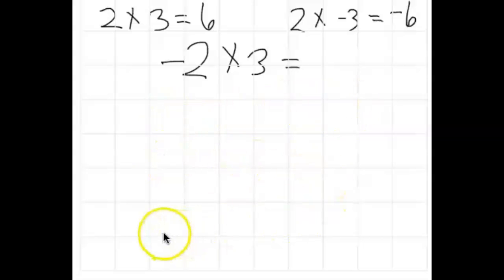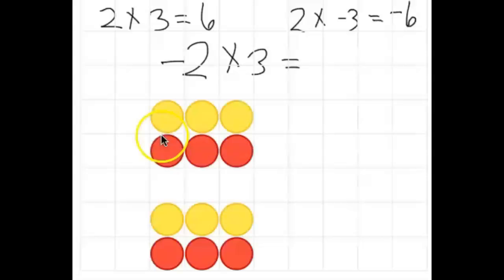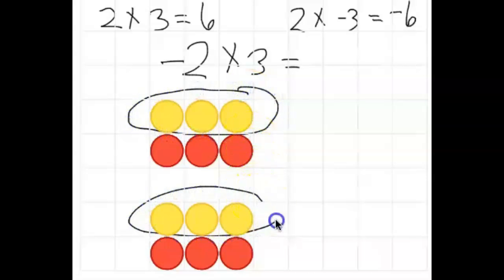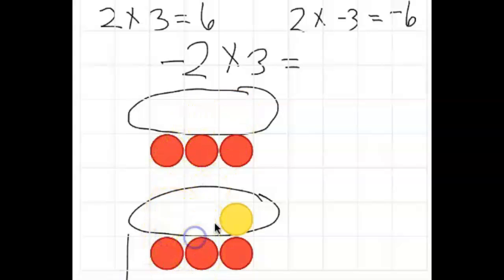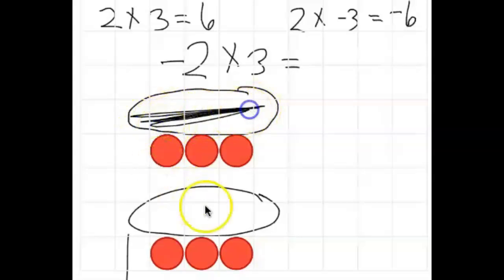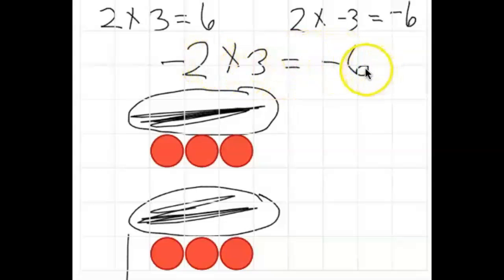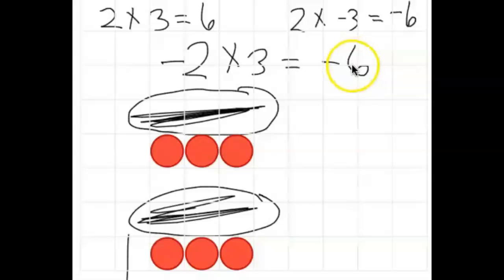This is what two groups of 3 zero pairs looks like. Now we're going to take away two groups of the positive — the positives are the yellow. This is one group of positive, and this is one group of positive, and I'm going to take them away. So if I take away the two groups of positive and remove this and this, what am I left with? The answer is going to be negative 6. So a negative times a positive has a negative answer.